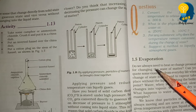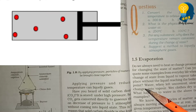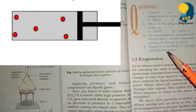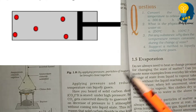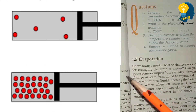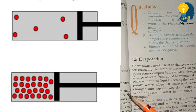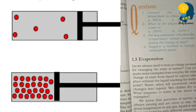When we take CNG — compressed natural gas — and apply high pressure on it, it will convert into liquid gas.